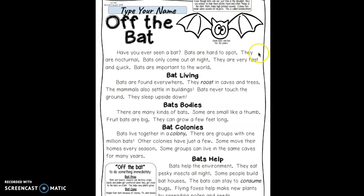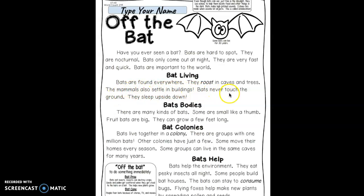It says: even though bats can see just fine in the daylight, they use echoes to help them locate food and other things in the dark. Bats make high-pitched sounds like screeches. Echoes are made when sounds hit objects — this is called echolocation. Have you ever seen a bat? Bats are hard to spot. They are nocturnal. Bats may only come out at night. They are very fast and quick. Bats are important to the world. Bats are found everywhere. They roost in caves and trees — that might be a good verb to add. The mammals also settle in buildings. Bats never touch the ground. They sleep upside down — that's a verb, to sleep.